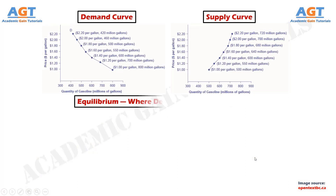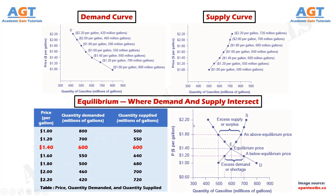Equilibrium — where Demand and Supply Intersect. Because the graphs for Demand and Supply Curves both have price on the vertical axis and quantity on the horizontal axis, the Demand Curve and Supply Curve for a particular good or service can appear on the same graph. Together, Demand and Supply determine the price and the quantity that will be bought and sold in a market. This figure illustrates the interaction of Demand and Supply in the market for gasoline. The Demand Curve D is identical to this figure of Demand Curve, and the Supply Curve S is identical to this figure of Supply Curve.